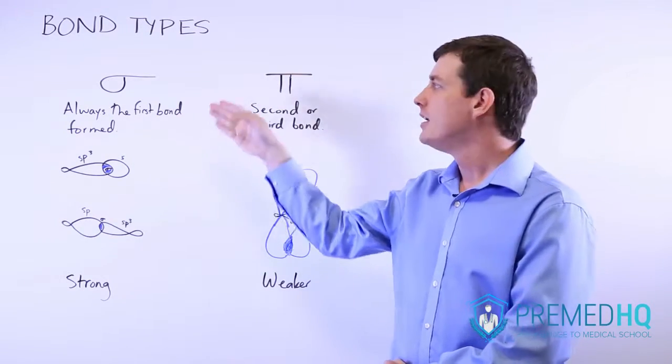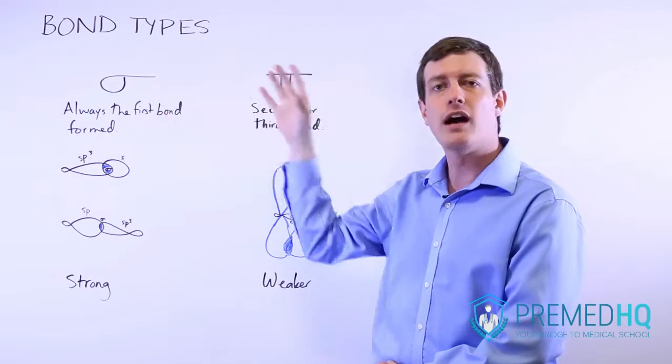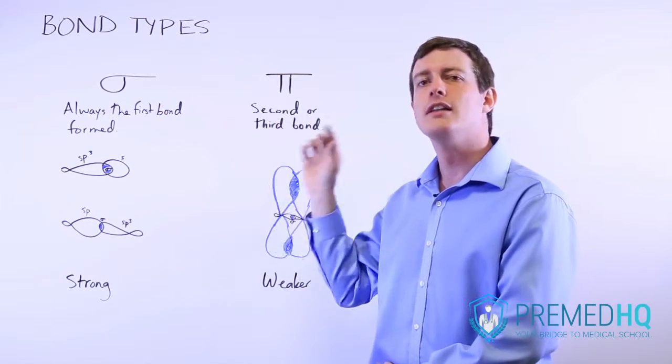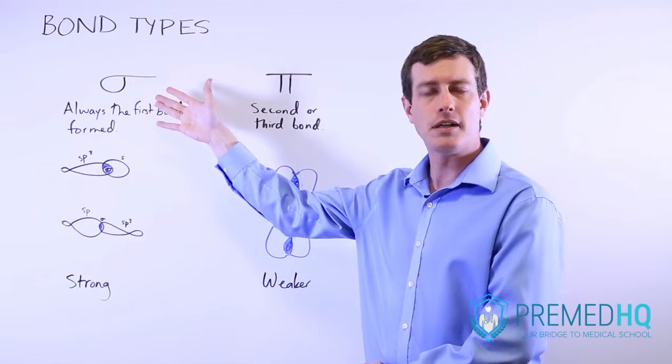If you have a single bond, that's a sigma bond. If you have a double or triple bond, the first one of those formed is a sigma bond.